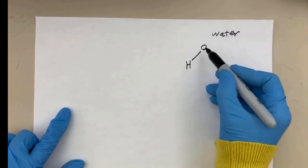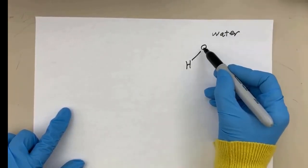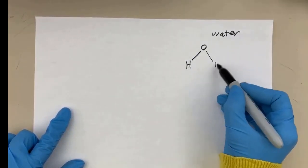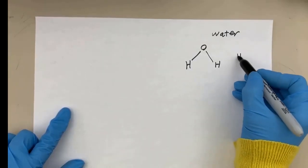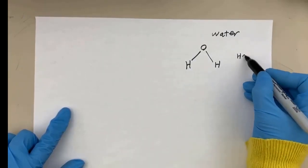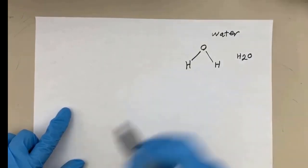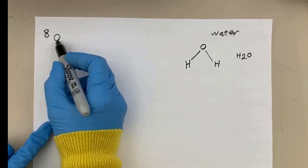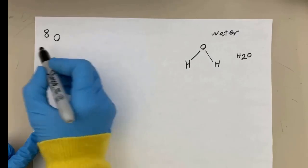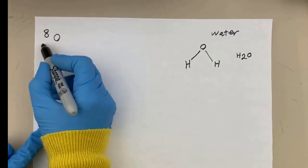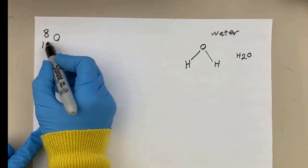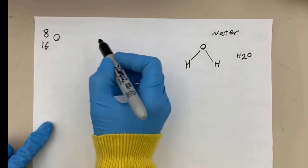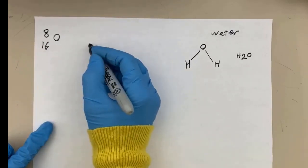This is the structural formula of the water molecule and the molecular formula is H₂O. The oxygen atom has an atomic number of eight and an atomic mass of around 16.